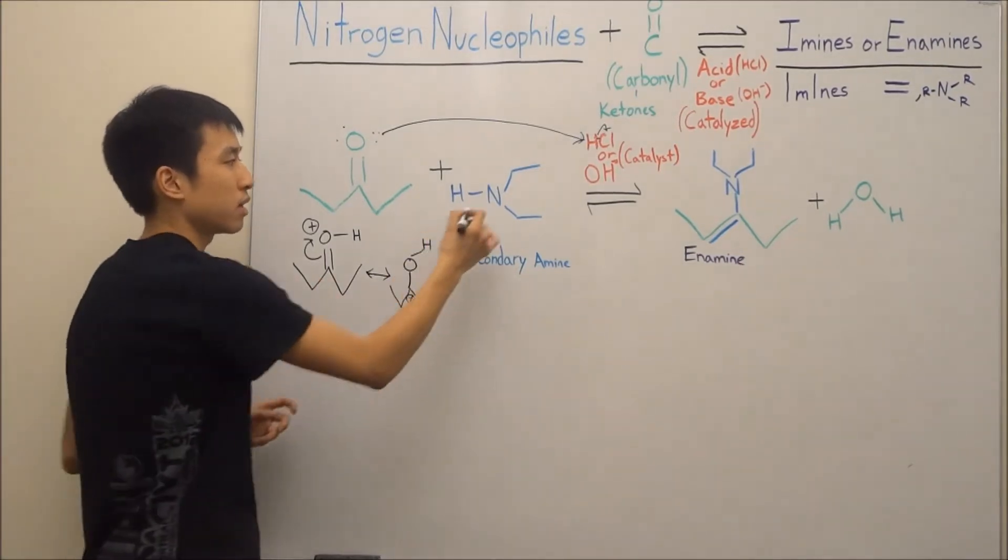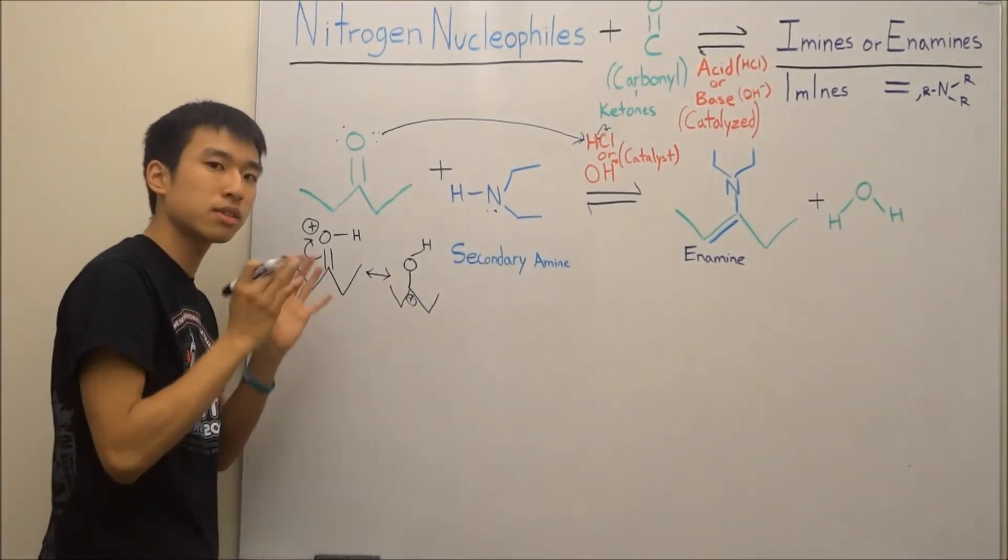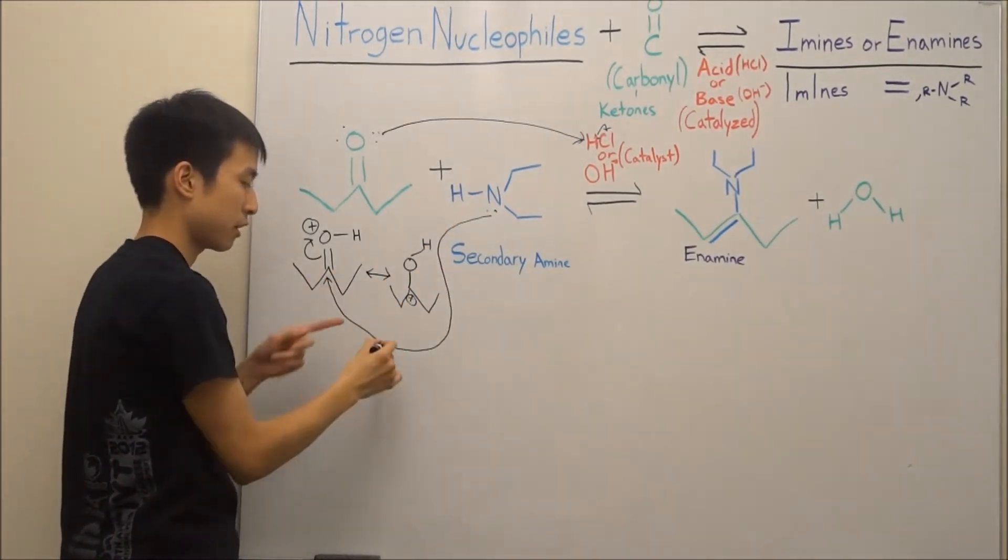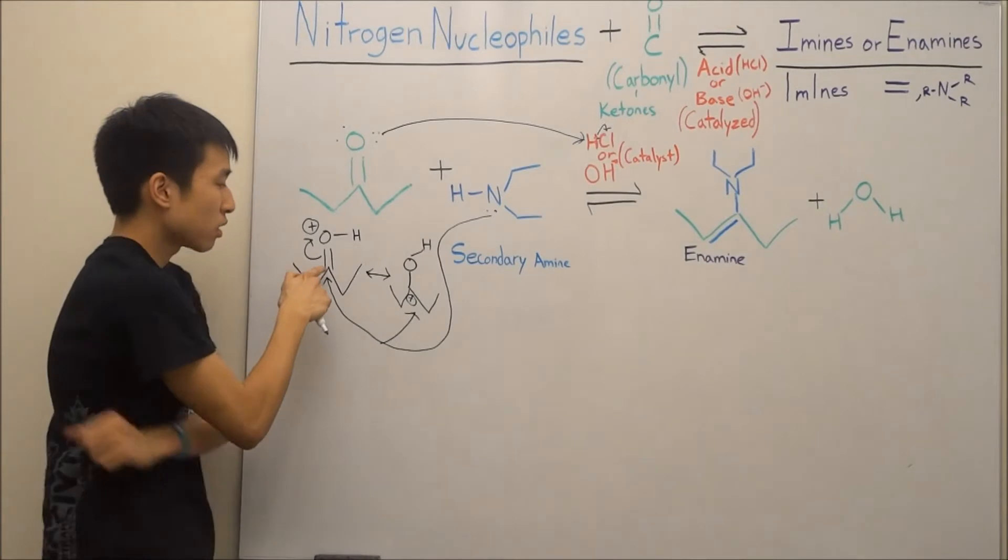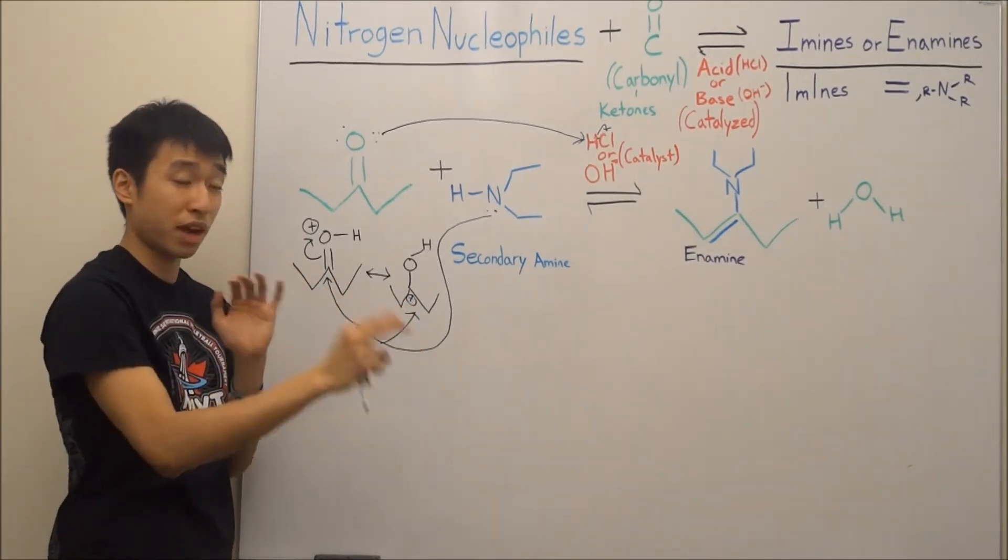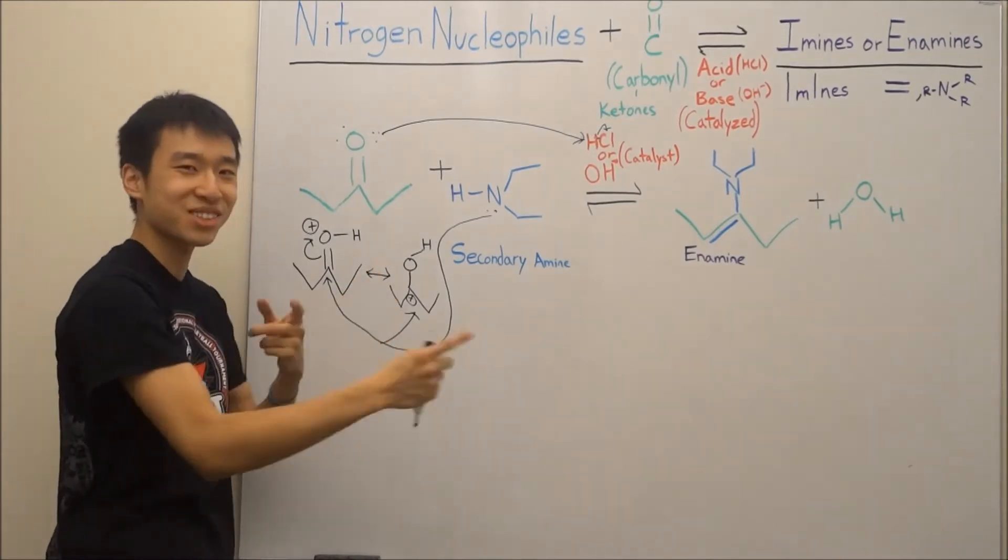Another way of seeing it is the secondary amine sees this and takes this opportunity to attack the vulnerable carbon here in either case. Because this carbon here is secretly positive. It's just resonating really, really fast, so you can't really see it.